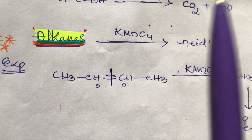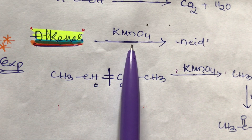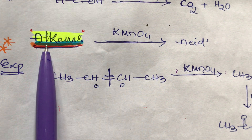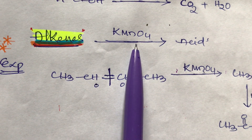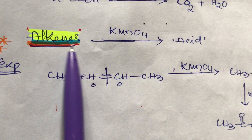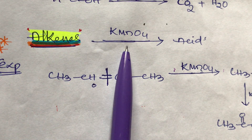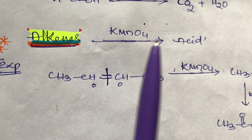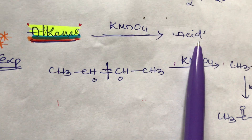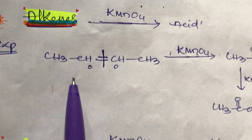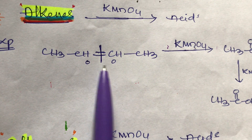The next topic is alkenes. Alkenes are oxidized with KMnO4 or K2Cr2O7, potassium dichromate, to give acids.